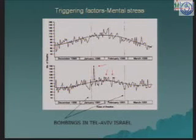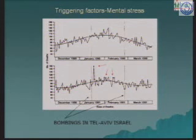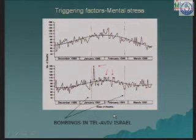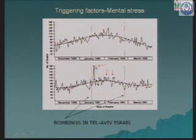Similarly, mental stress is very important — everybody is under mental stress. Frustration, anger, and outbursts of anger are all known to trigger acute coronary syndromes. A very interesting slide shows data from 1990 and 1991 during the Palestinian-Israeli conflict: the number of patients presenting with acute coronary syndrome in Tel Aviv was found to be significantly higher during the timing of the bombings in Tel Aviv compared to the previous year when they were much lower. Mental stress does precipitate acute coronary syndromes.